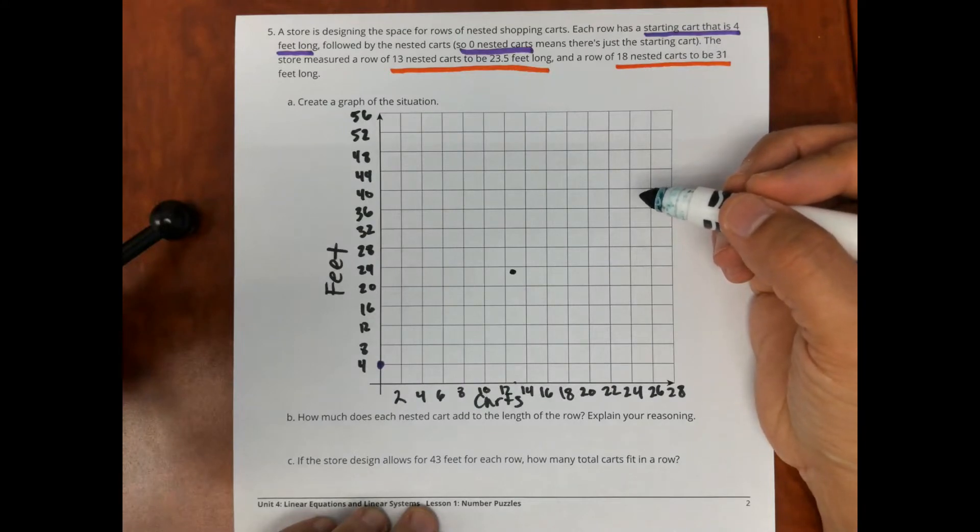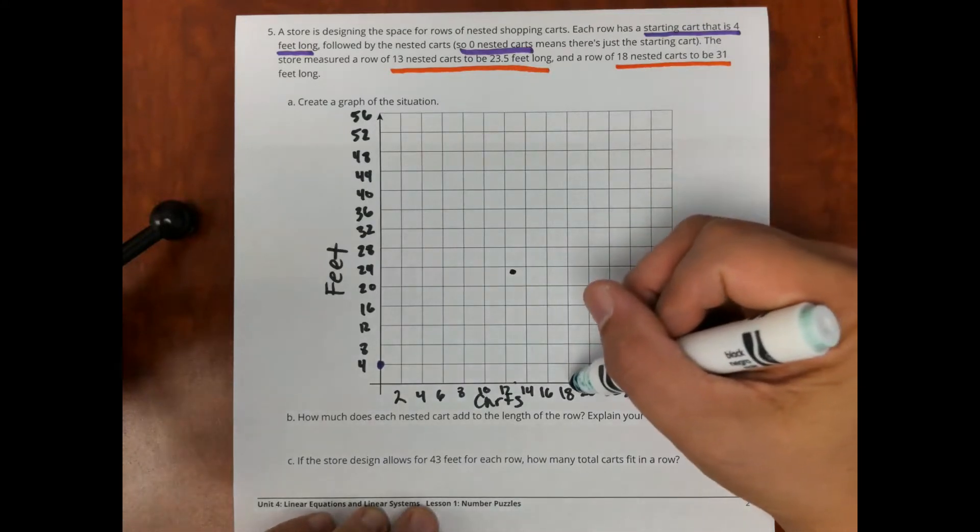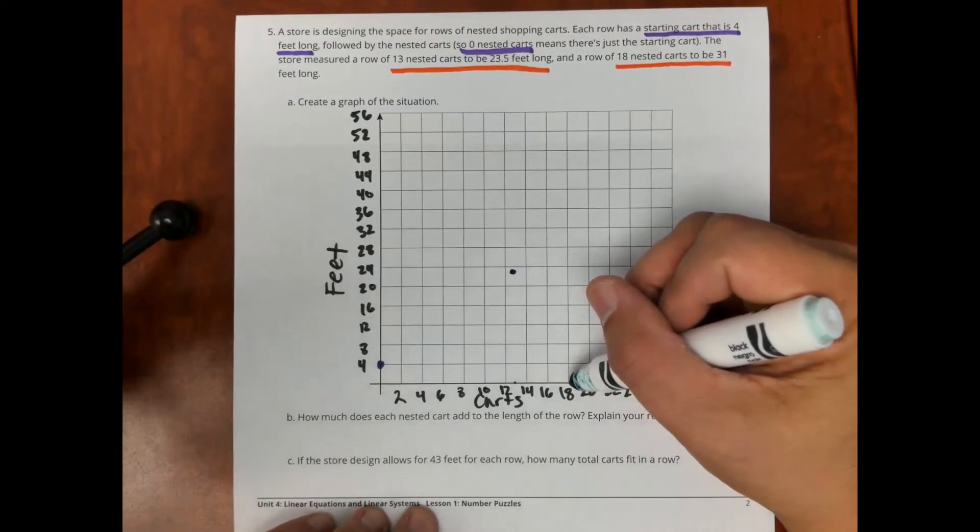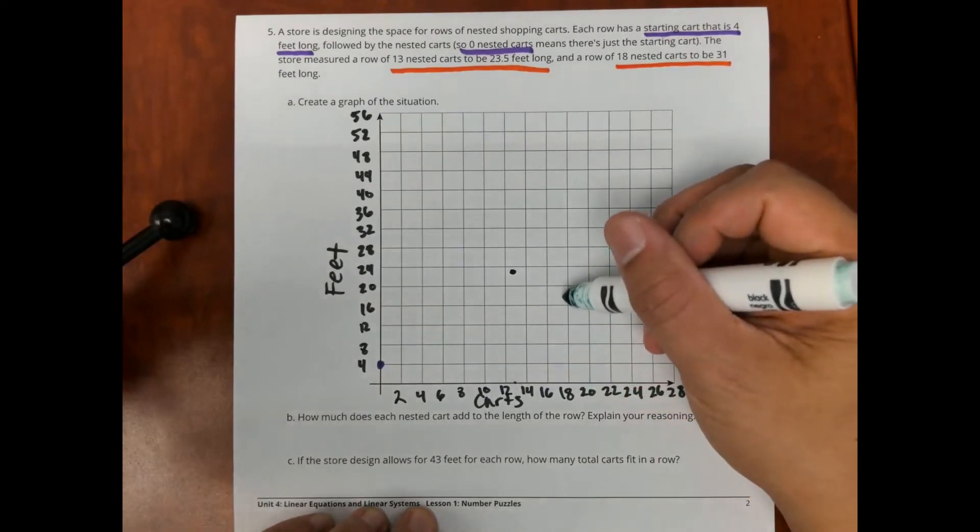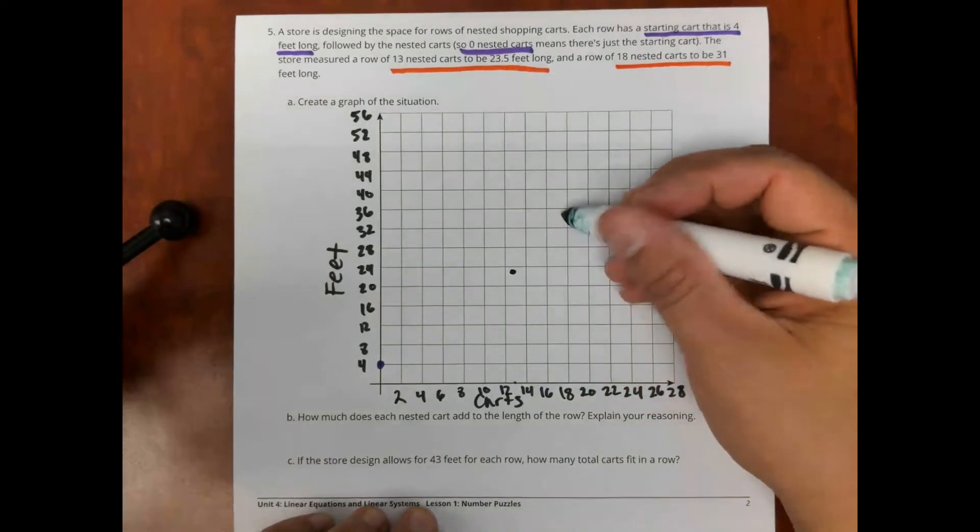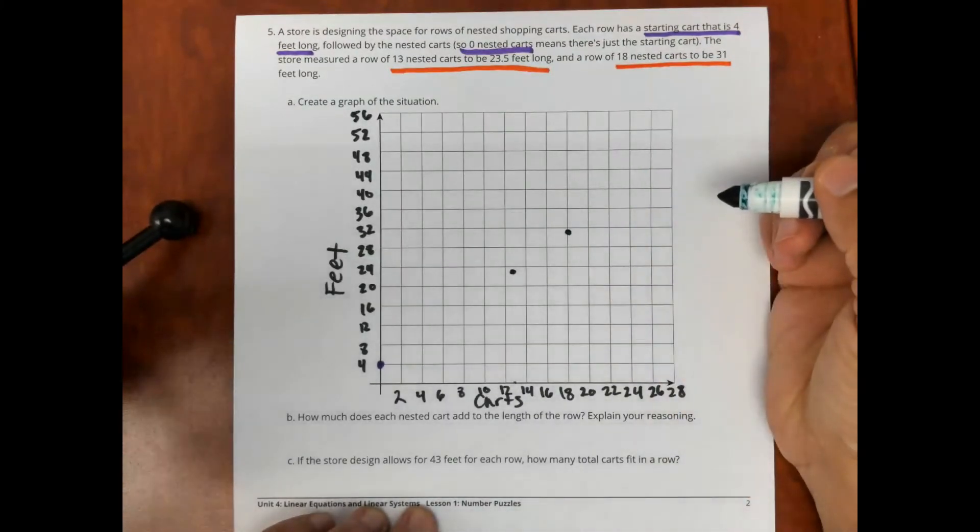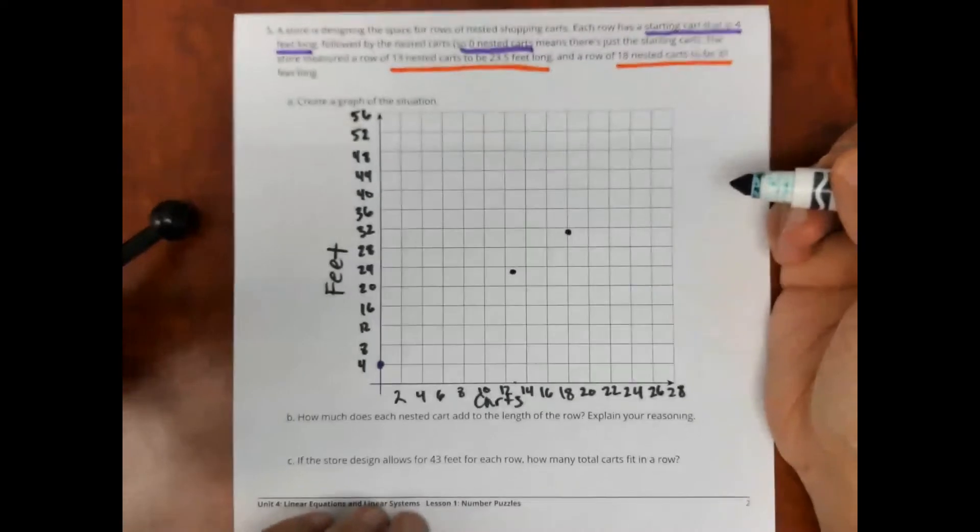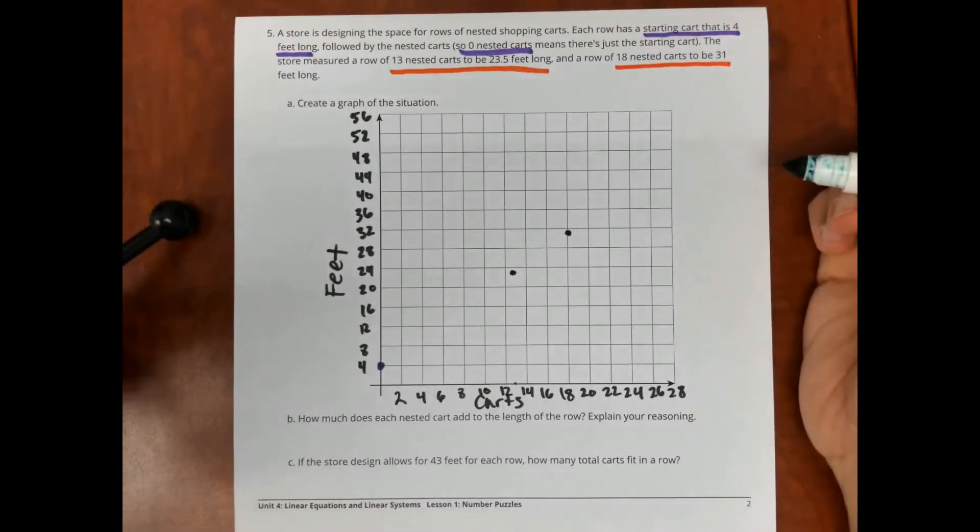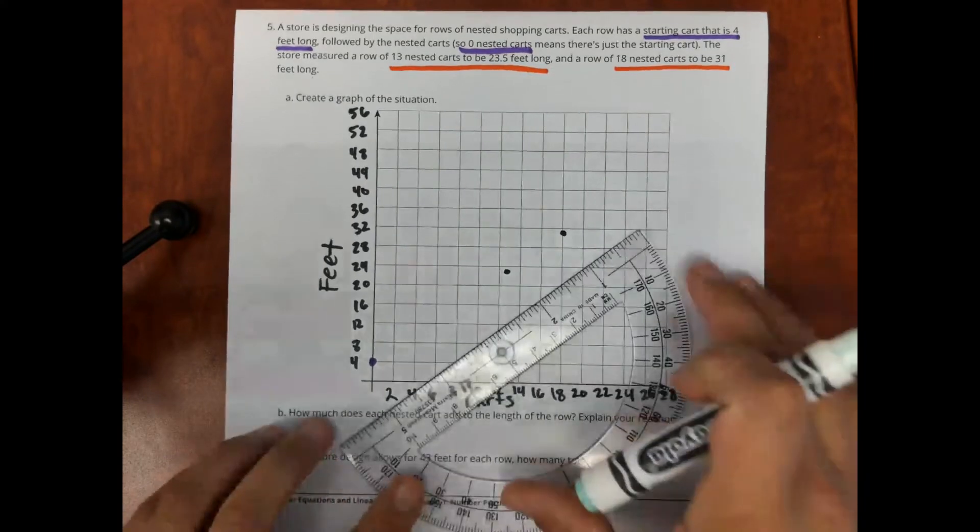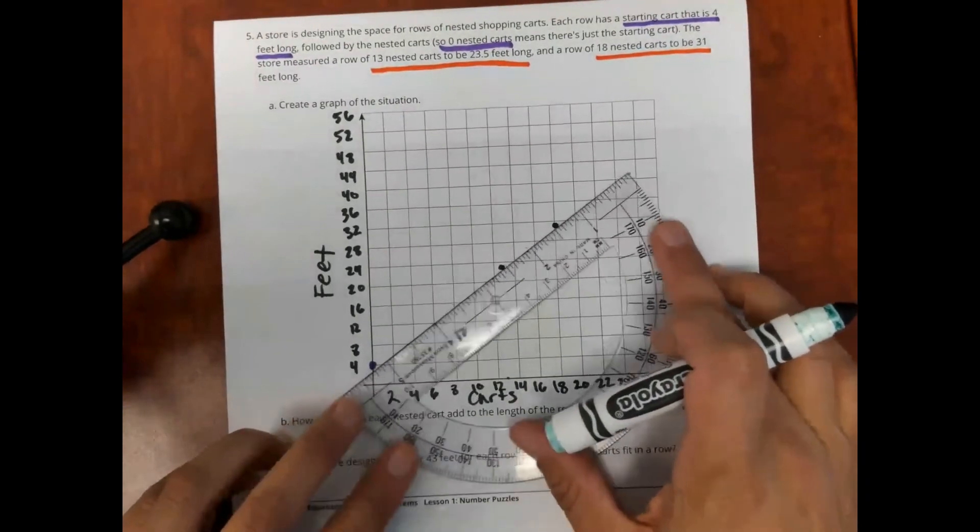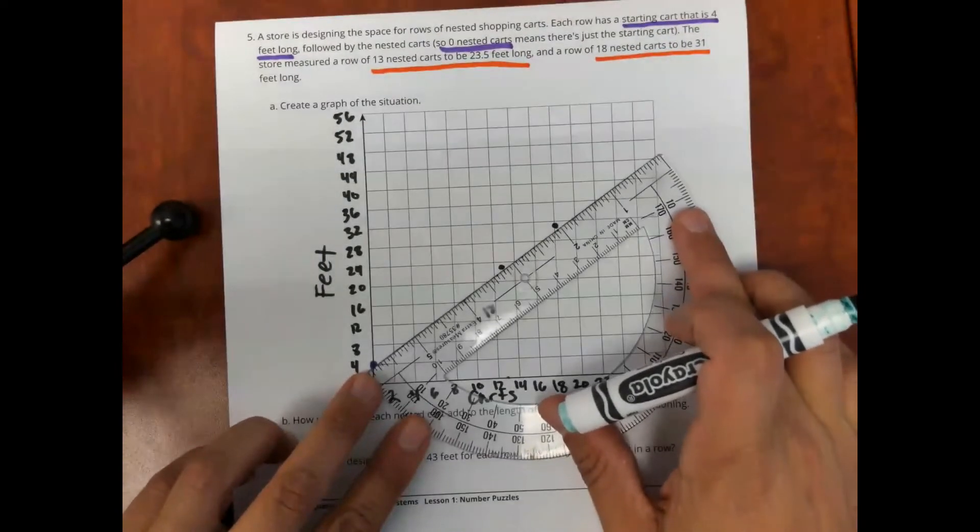The last point I'm going to put here is 18 is 31. 18 carts comes out there. 31 is going to be right below the 32, somewhere about right here. And you can see that my three points are lining up. So, that's how I know that I am on the right track to draw a graph. Now, I'm going to draw my line, going all the way across the axis here.